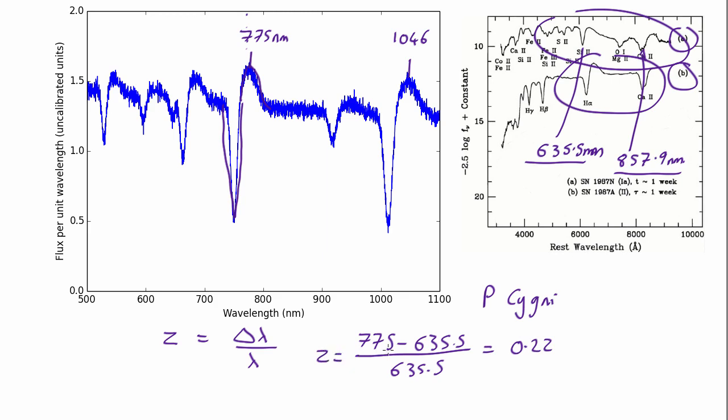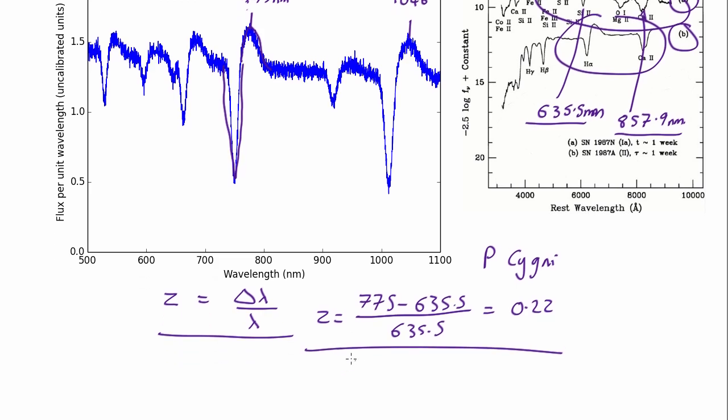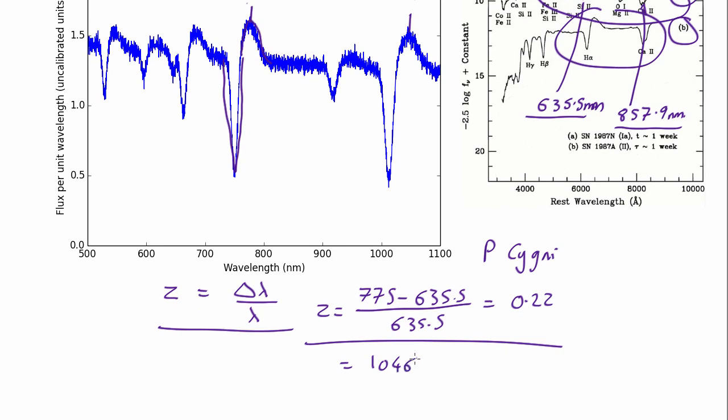So we're looking at observed wavelength minus lab wavelength divided by lab wavelength and that gives us redshift. And if we do the same thing here we get 1046 minus 857.9 all over 857.9 and that also comes out as 0.22, so it looks like our guess was correct. This is silicon 2 and this one is calcium 2 and it's all self-consistent because you get the same redshift for both.